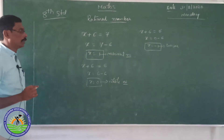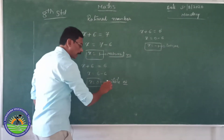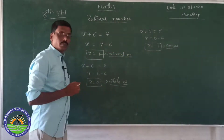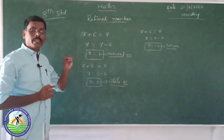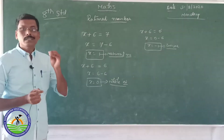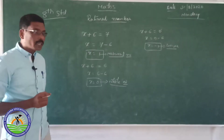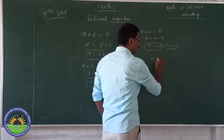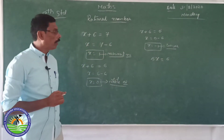Observe the solutions: 1 is a natural number, 0 is considered a whole number, and minus 1 is an integer. Solving these simple equations gives solutions from the available list of integers. Now we have to consider another equation: 5x is equal to 6, and 3x plus 5 is equal to 7.